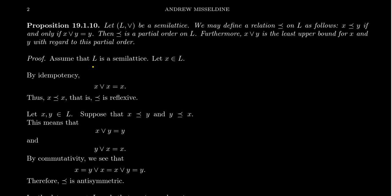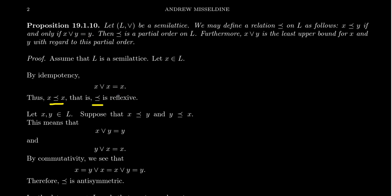Assume L is a semi-lattice and consider element X. By the idempotency axiom, X join X equals X. Looking at the definition of what it means for X ≤ Y — that X join Y equals Y — that's exactly what we have. So X ≤ X, meaning the relation is reflexive. Idempotency directly implies reflexivity.